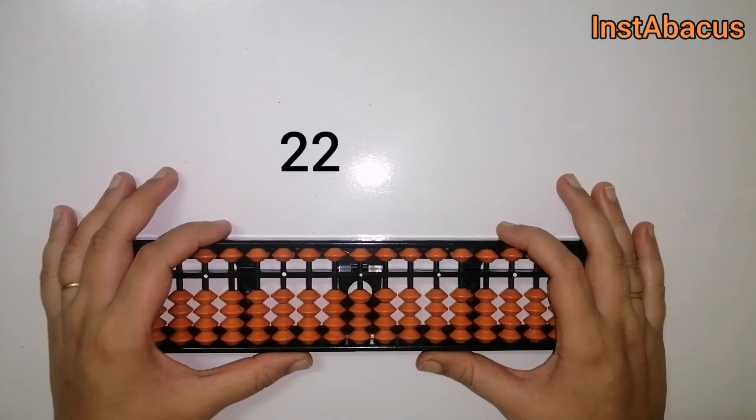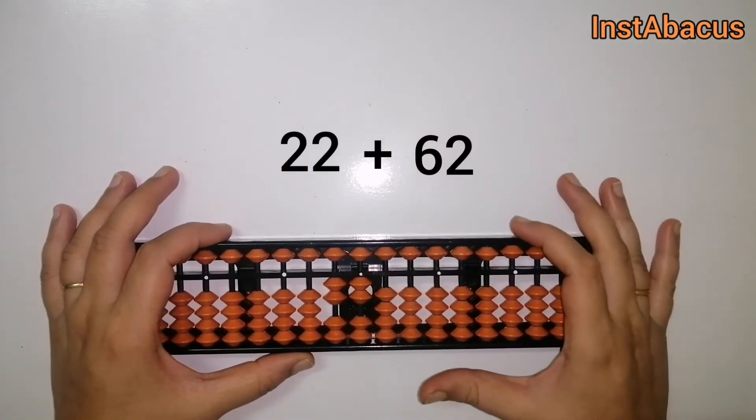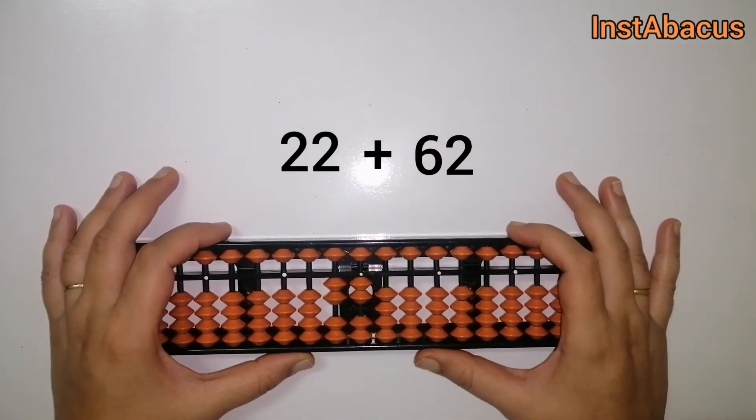Next, 22 plus 62, right? 22, easy. Now to this we are going to add 62. How are we going to do that?